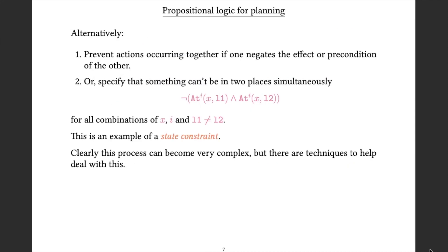Now alternatively to that, you can try and prevent actions occurring together if one negates the effect or precondition of another. You might specify that X can't be at L1 and at L2 at the same time, and include fragments of this form for all possible combinations of X, i, L1 and L2, where L1 and L2 are different. And that's an example of a state constraint.